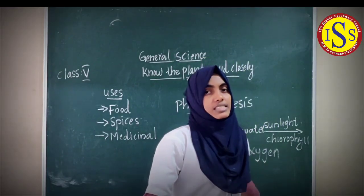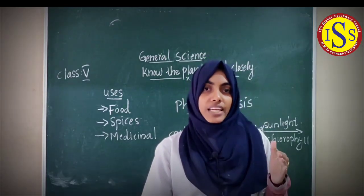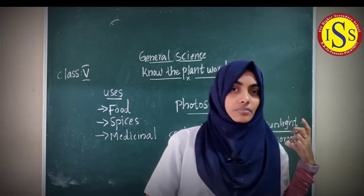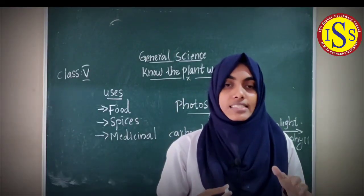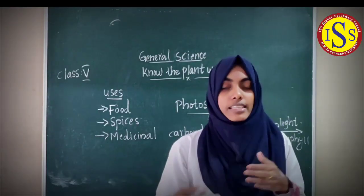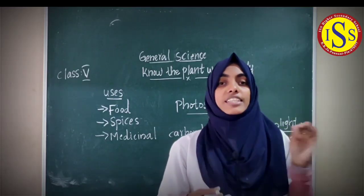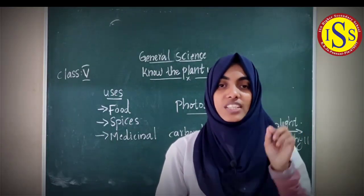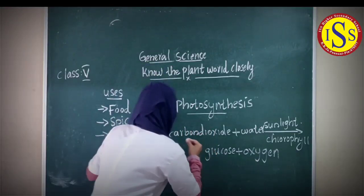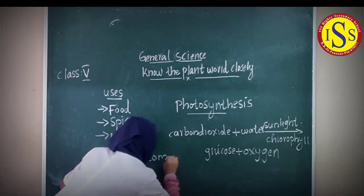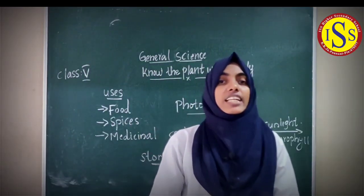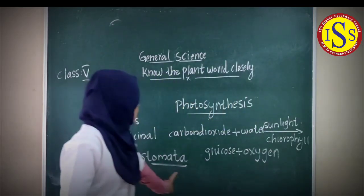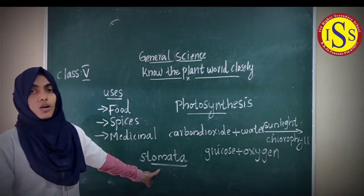In photosynthesis, gas exchange takes place in the leaves. Carbon dioxide is absorbed from the surroundings and oxygen is released. This gas exchange takes place through small pores in the leaves called stomata. Stomata means small pores present in the leaves.